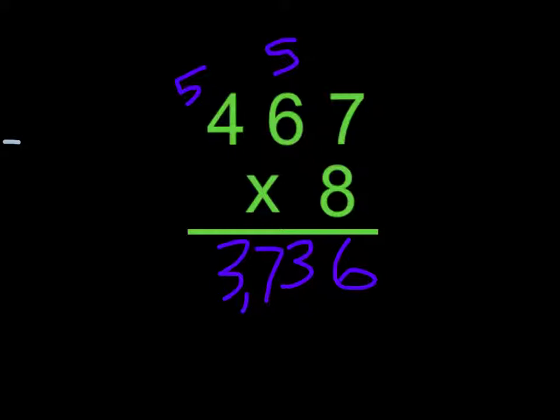Six times eight equals forty-eight, and plus five is fifty-three. I put down the three and carry the five. Four times eight equals thirty-two. Thirty-two plus five equals thirty-seven, so I put down thirty-seven and put the comma between the three and the seven.